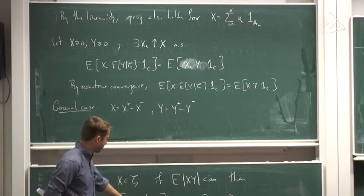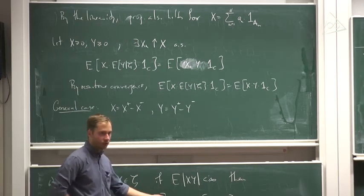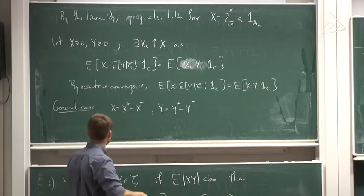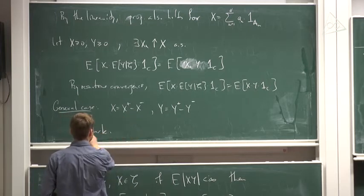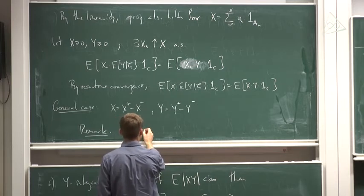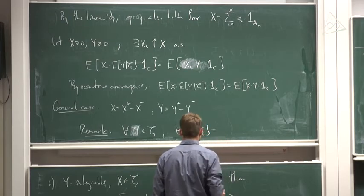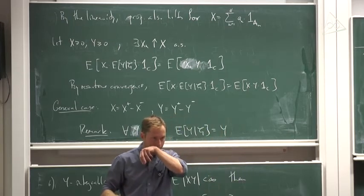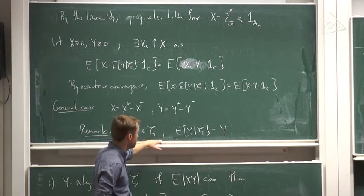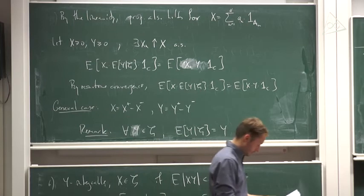Note that the case when 𝒢 equals the full sigma algebra F is contained in this property, and moreover this property also implies that if Y is 𝒢-measurable, then E[Y|𝒢] = Y. Previously we had this when 𝒢 was the full sigma algebra, but now we know that if Y is measurable with respect to 𝒢, then E[Y|𝒢] = Y, because we can take Y out of the expectation using this property.